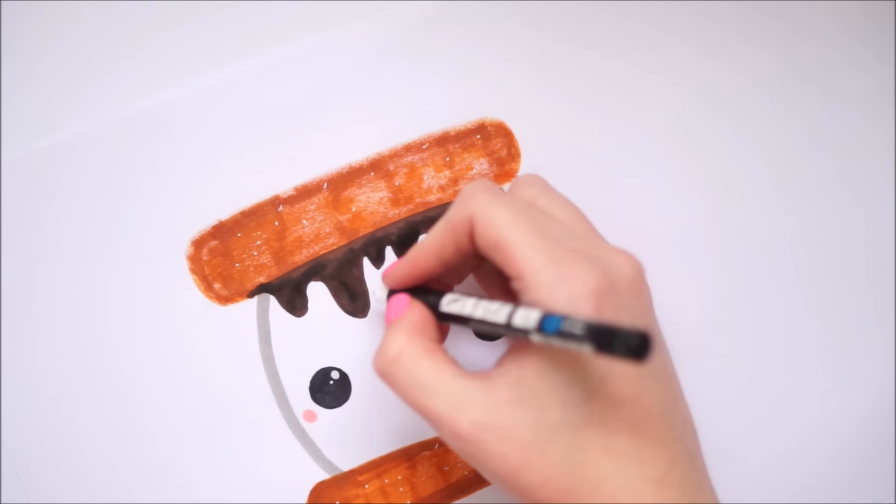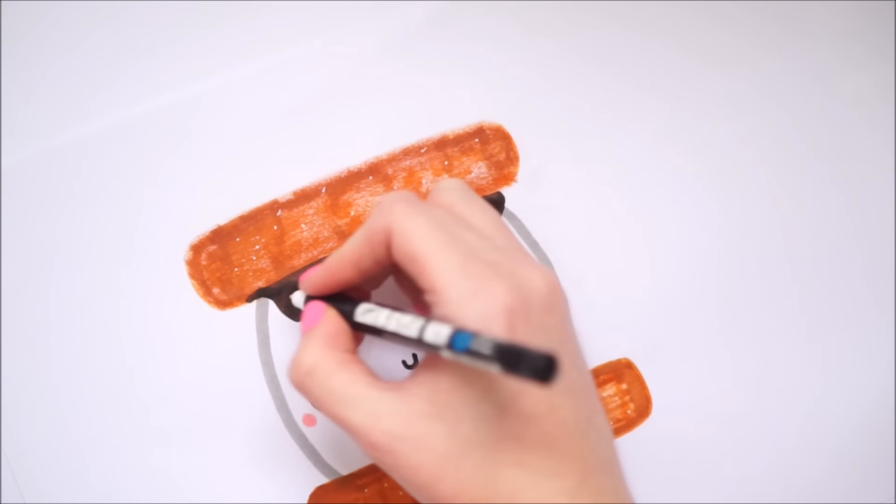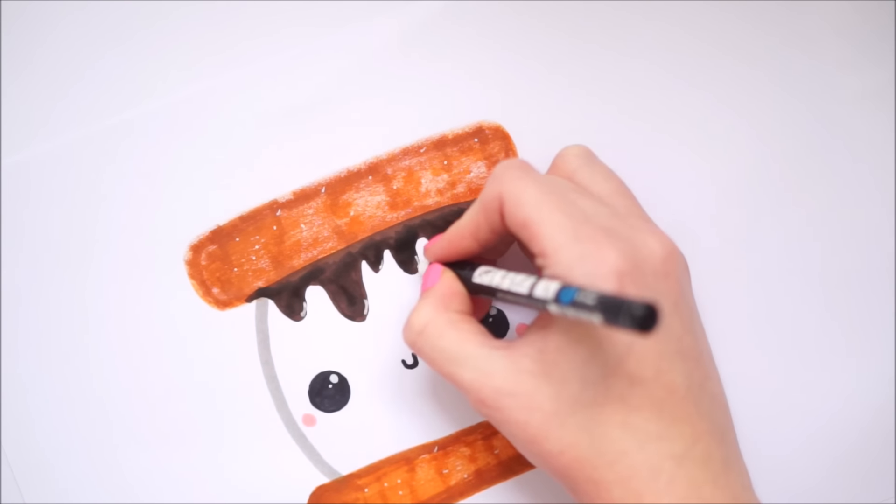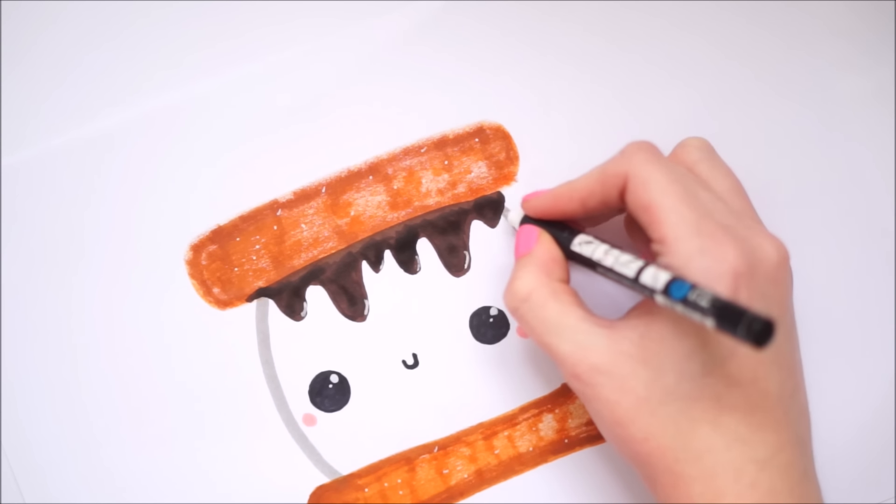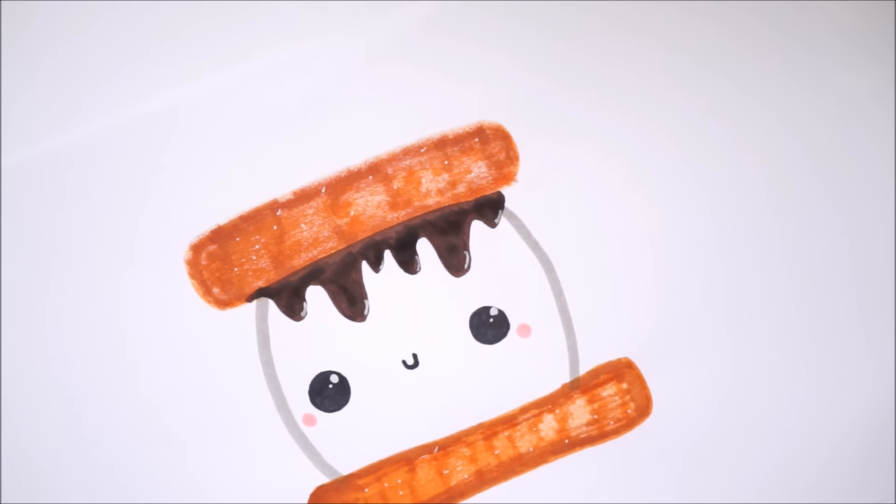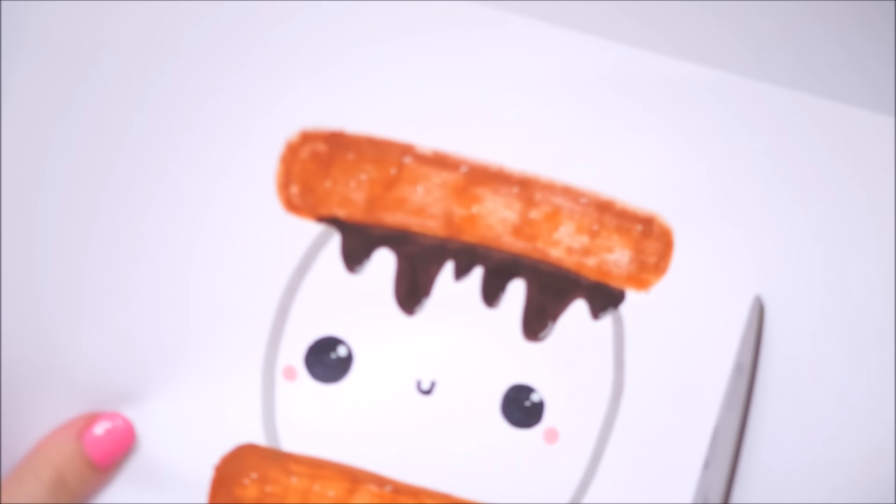Now you can use like tipex or that corrector fluid. I don't know if it's called tipex in other countries or not, but it's called tipex here. That white stuff that you use to correct pen will also give you a nice opaque white finish.